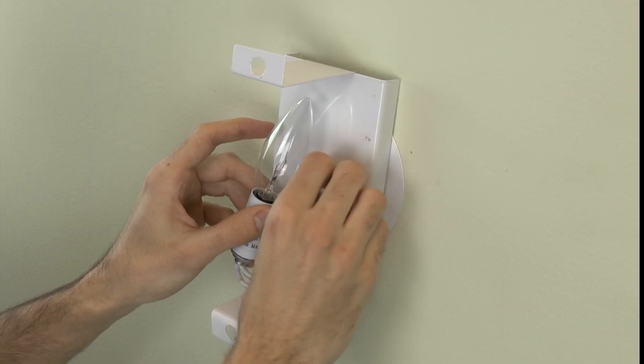All right, now that we're absolutely sure there's no power to this fixture, we can begin our work. First we'll take the shade off and then we'll pull the fixture off the wall.